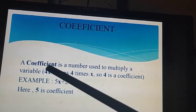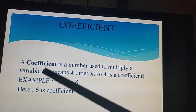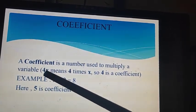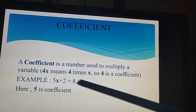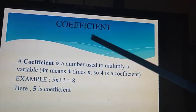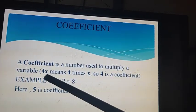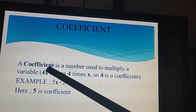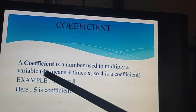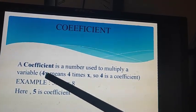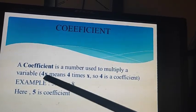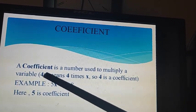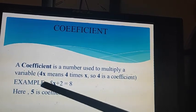This 4 is constant, but when it is with a variable, when multiplied with a variable, it becomes a coefficient, it is no more constant. Because constants have values that do not change. But if we take different values for x, the value of this complete term will change. So here 4 is not constant, it is coefficient. When we multiply a number with a variable, the numerical part becomes a coefficient.